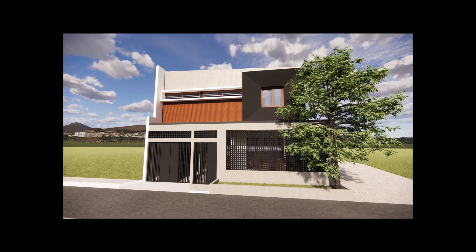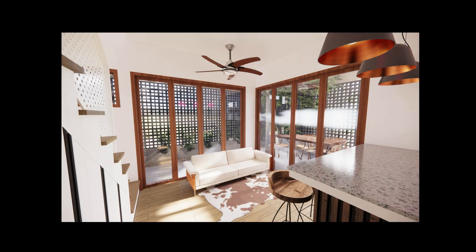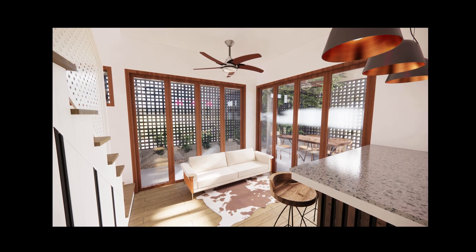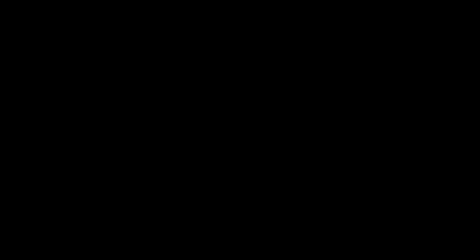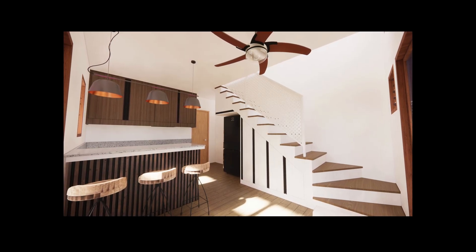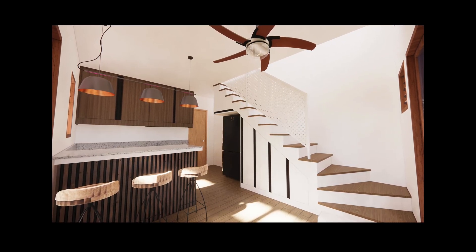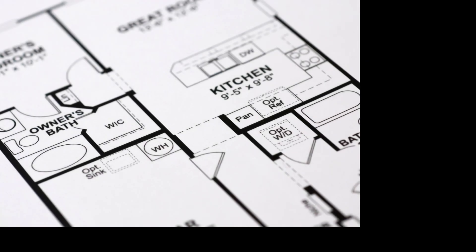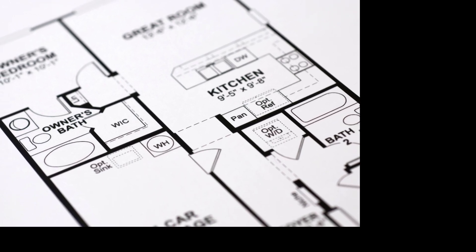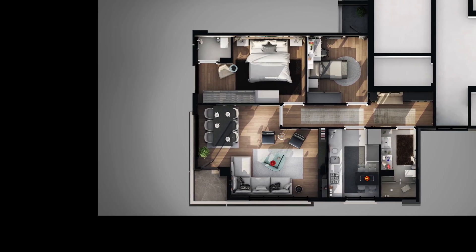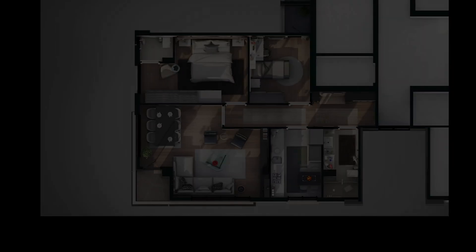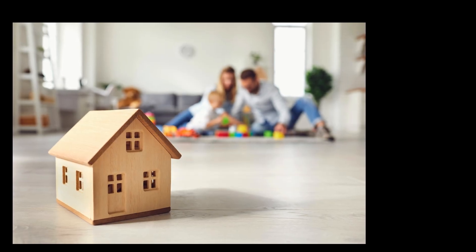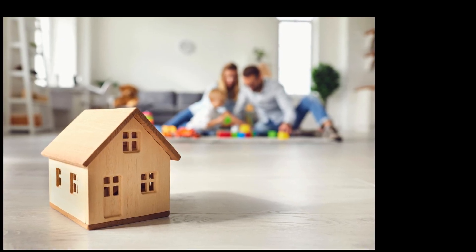Designing a practical home involves considering both functionality and efficiency while ensuring comfort and aesthetics. Here are some key principles to keep in mind. First, Functionality: Prioritize functionality in every aspect of the design. Each room should serve its intended purpose efficiently with easy flow between spaces. Consider the needs and lifestyle of the occupants when planning the layout and features of the home.